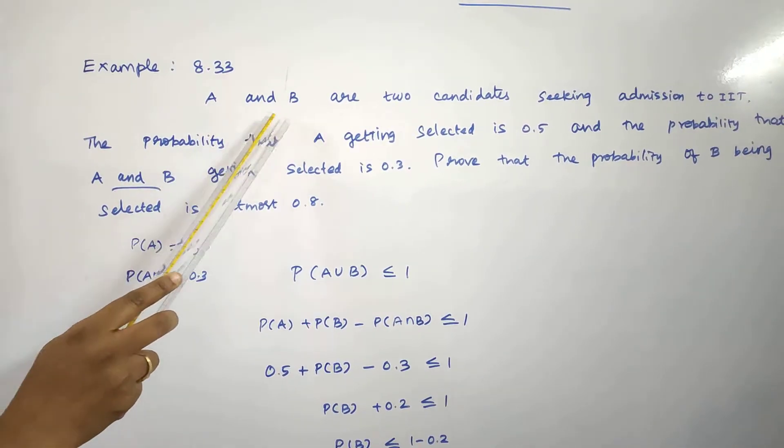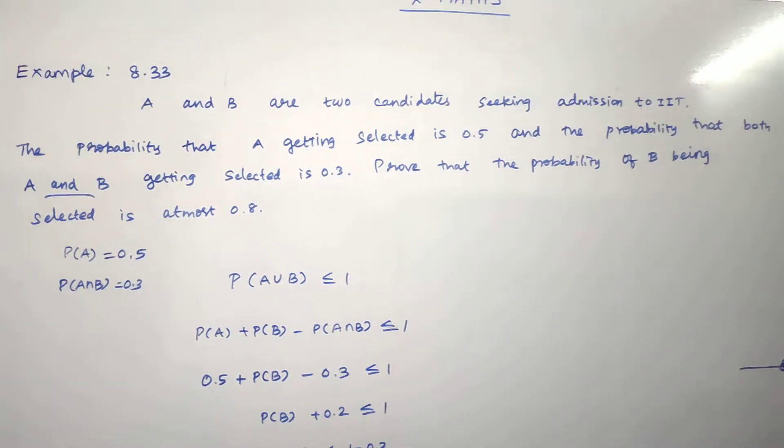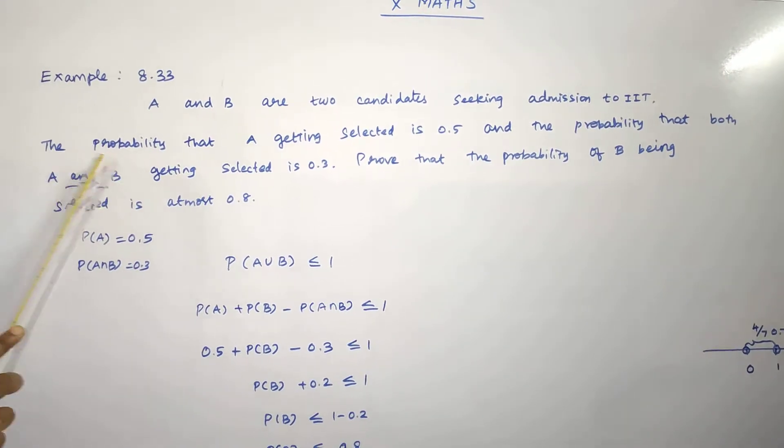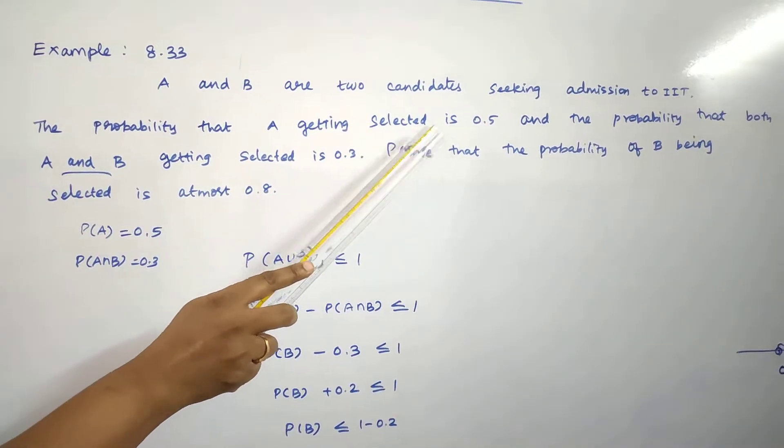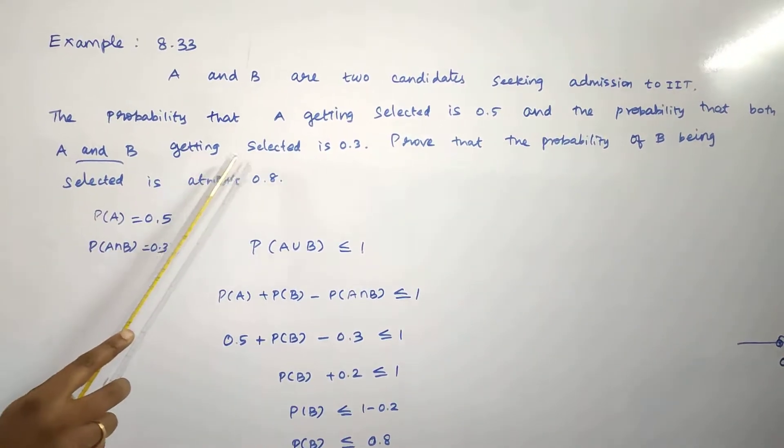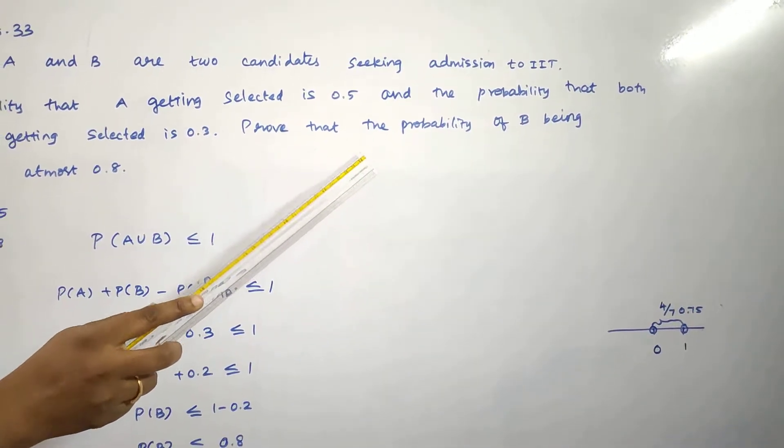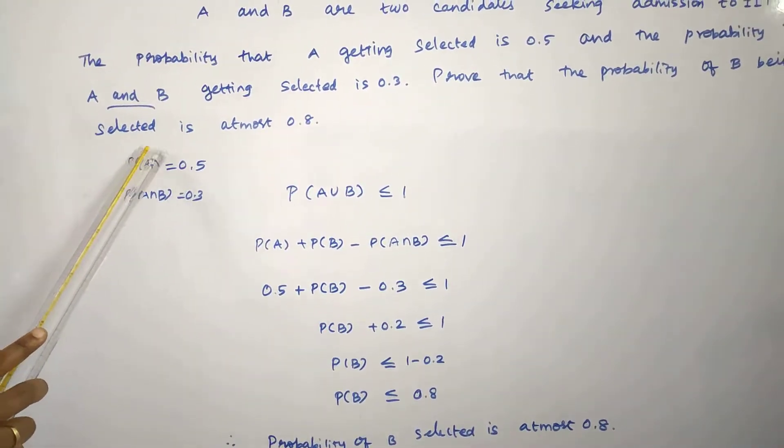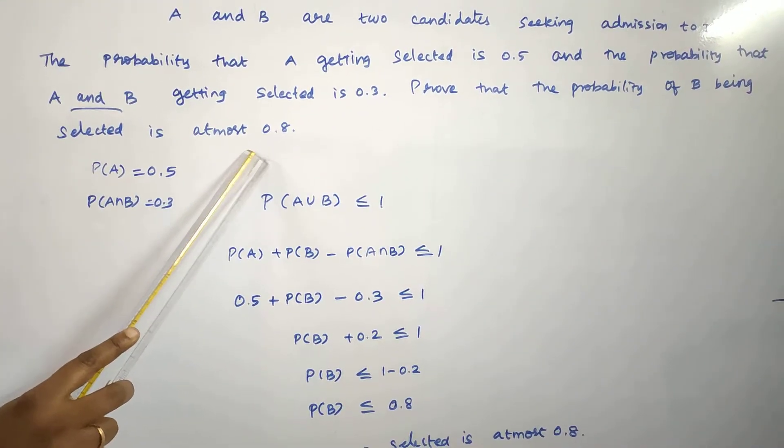Example 8.33: A and B are two candidates seeking admission to IIT. The probability that A getting selected is 0.5 and the probability that both A and B getting selected is 0.3. Prove that the probability of B being selected is at most 0.8.